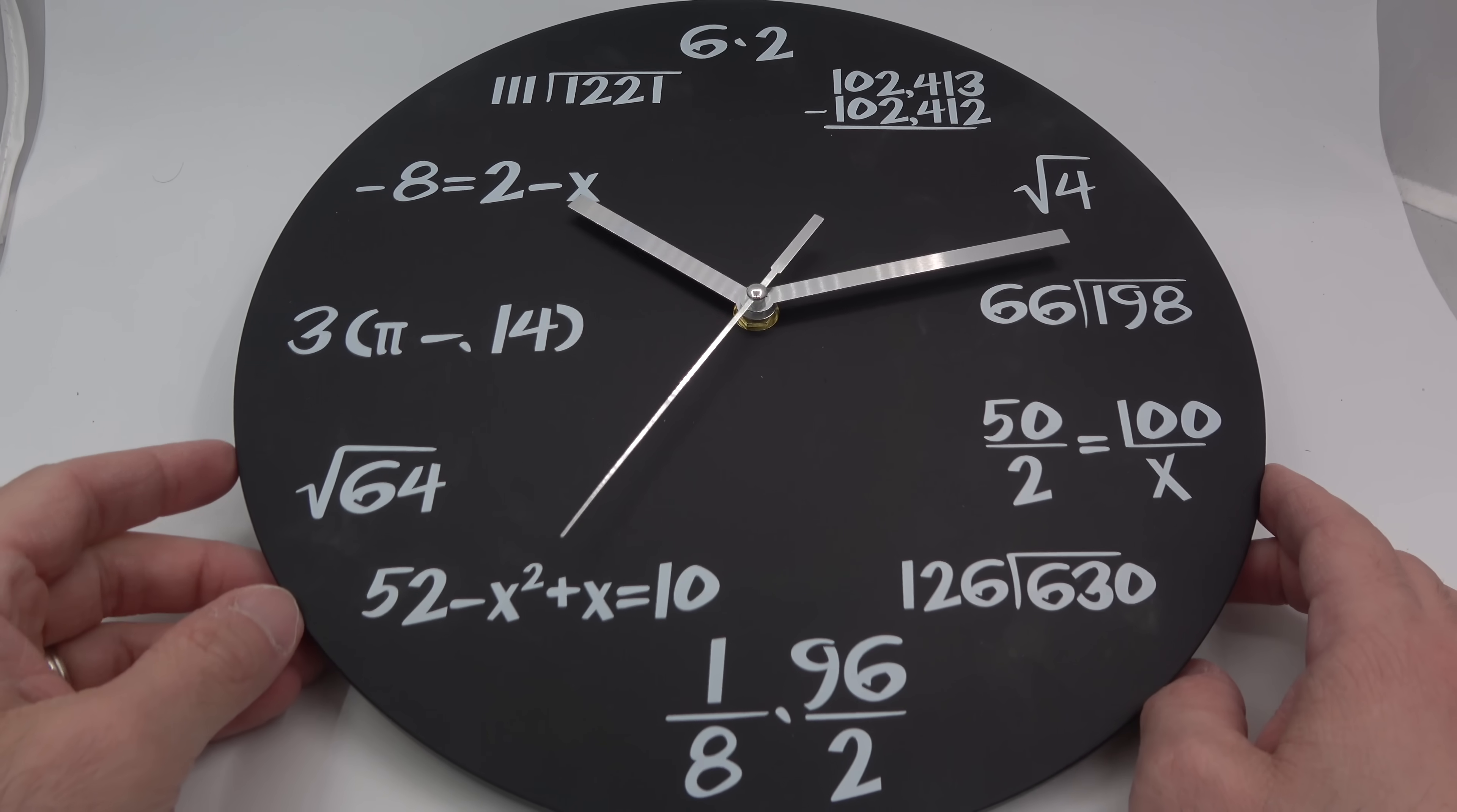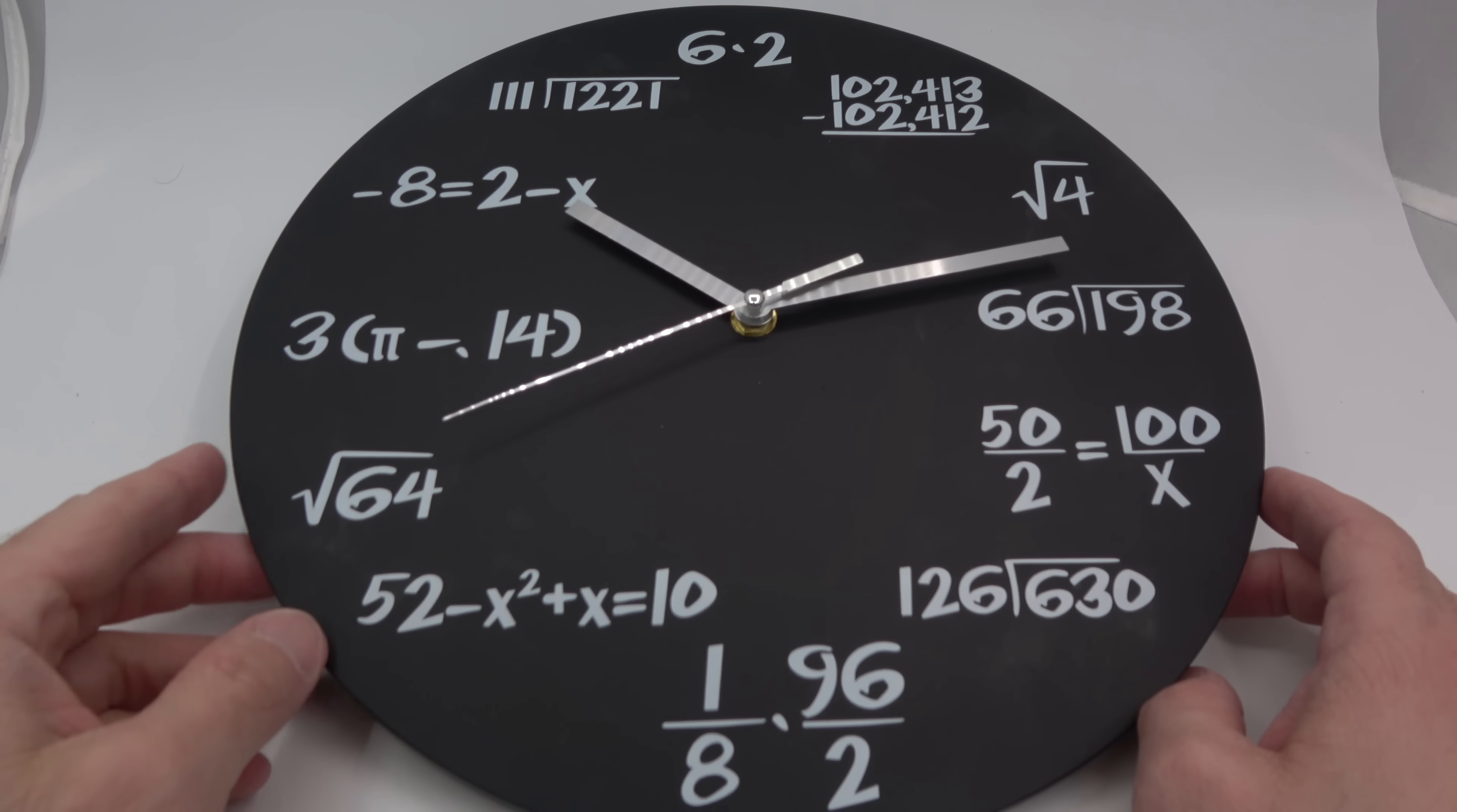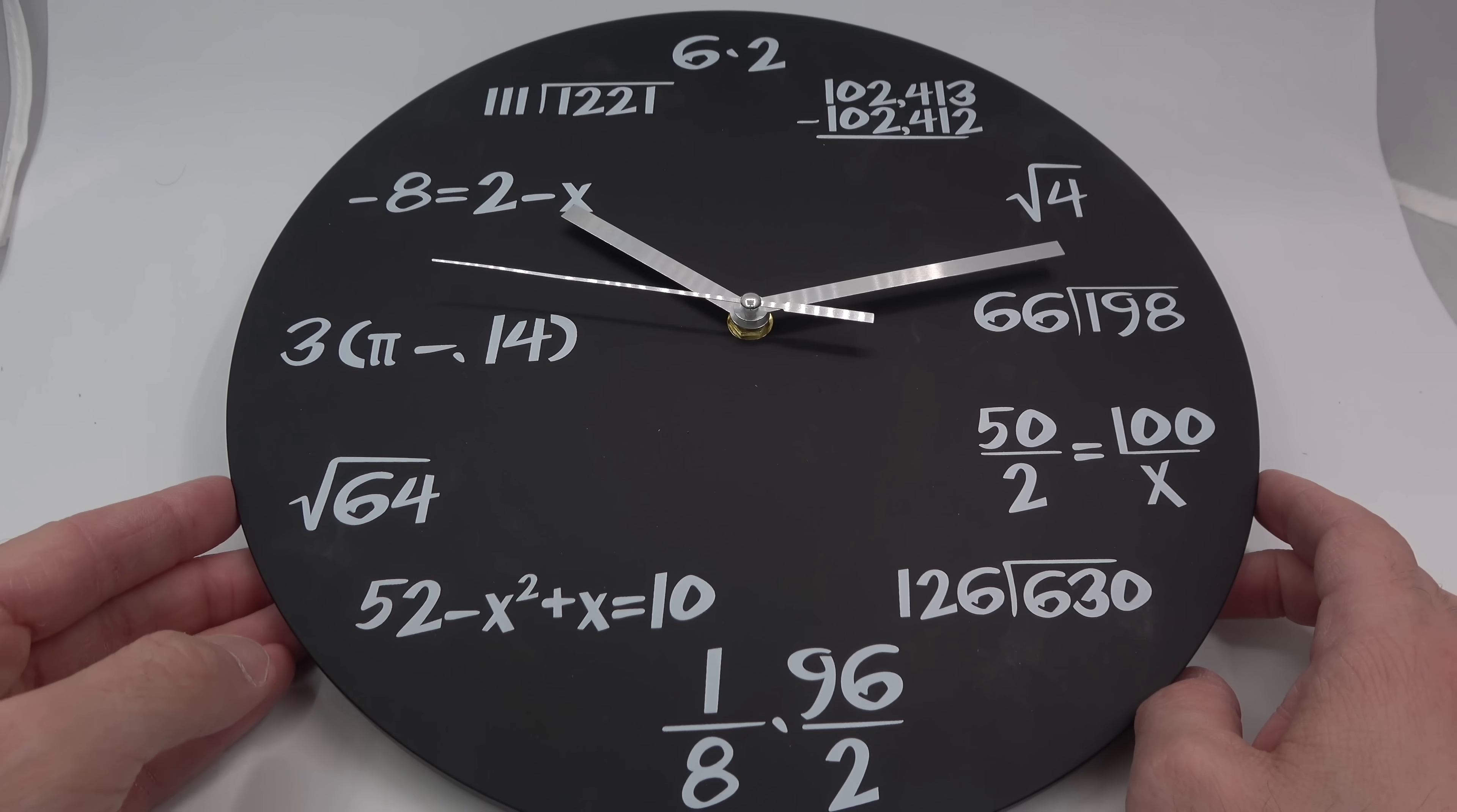So before we start, we'll take a look at the clock so you can, I don't know if you always see it on the wall what all the numbers around the outside are. So here they are from 1 to 12 or from 12 to 11 or however you want to say it.